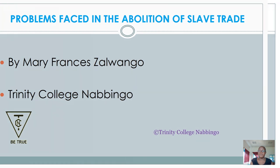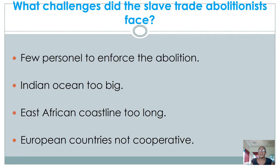The first challenge was few personnel to enforce the abolition. Much as the British really wanted to end this trade, they needed a lot of people to help them — both at the East African coast and in the interior. However, they did not have enough people to do the abolition, so they eventually could not reach many areas, and this was a disadvantage to the struggle against this trade.